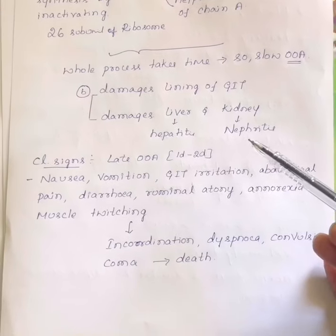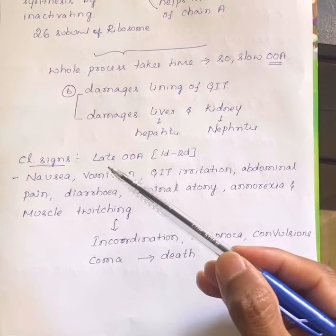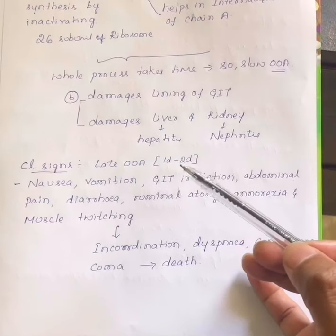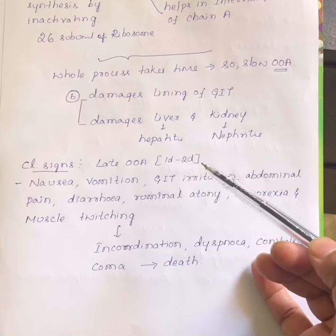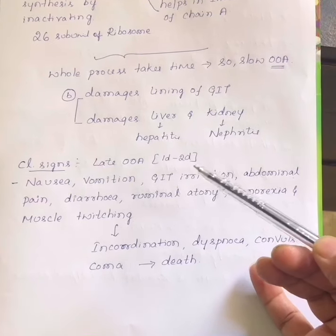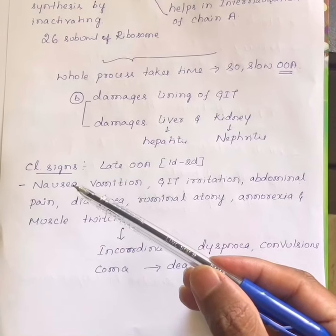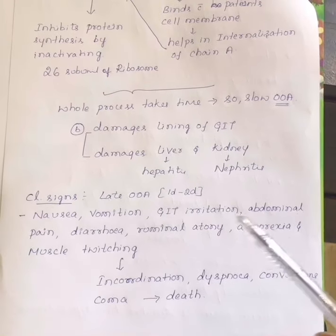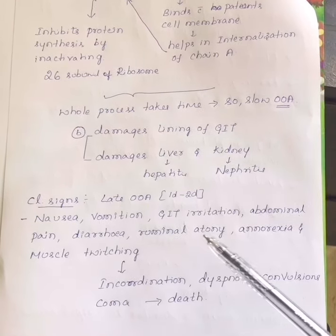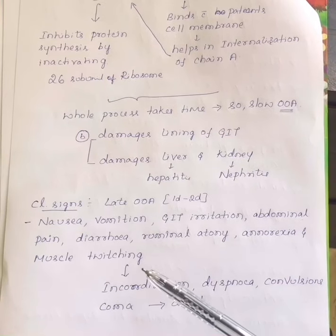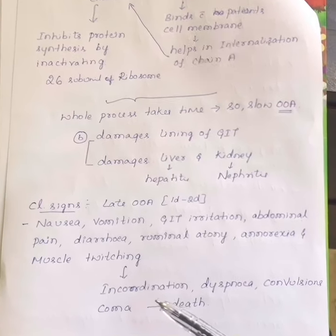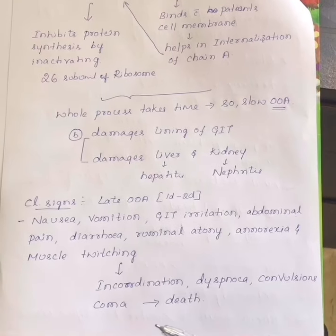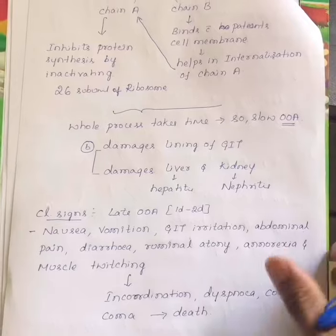Clinical signs generally have a late onset of action. One to two days after eating Abrus precatorius, clinical signs start appearing. These include nausea, vomiting, GIT irritation, abdominal pain, diarrhea, ruminal atony, anorexia, and muscle twitching. Later on there will be incoordination, dyspnea, convulsions, and coma. If untreated, there will be death of the animal.